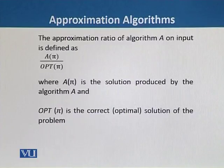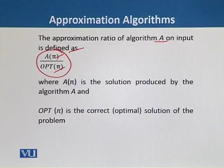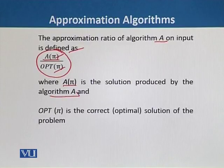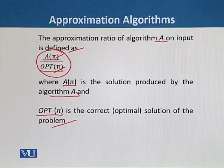The approximation ratio of algorithm A on input π is defined as A(π) over OPT(π). This approximation algorithm does not give us the optimum output after receiving an input. In this equation, A(π) divided by OPT(π), A(π) is the solution produced by the algorithm A. This solution is the approximation solution and not the optimum solution. And OPT(π) is the correct optimal solution of the problem. After dividing A(π) with OPT(π), we will come up with the approximation ratio.